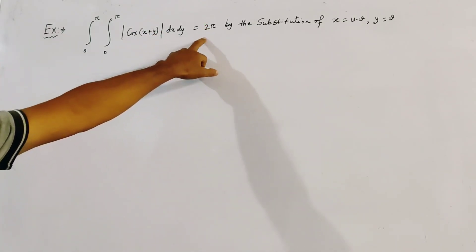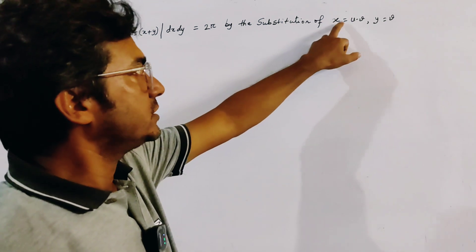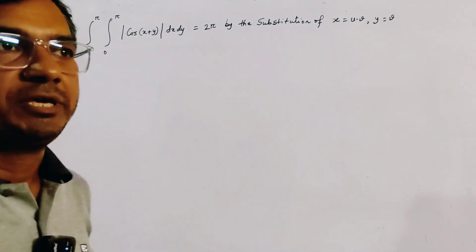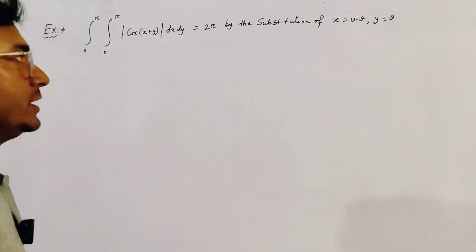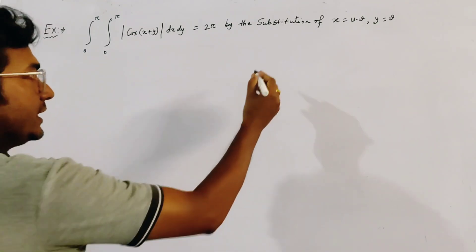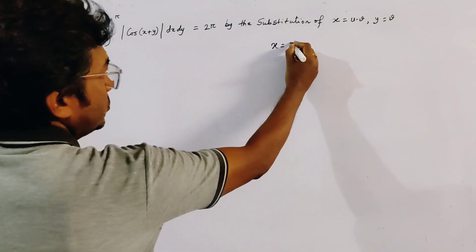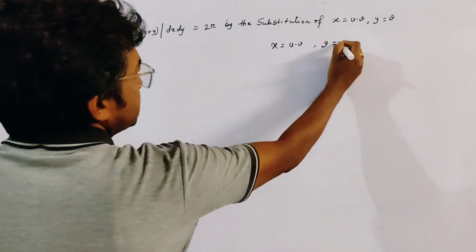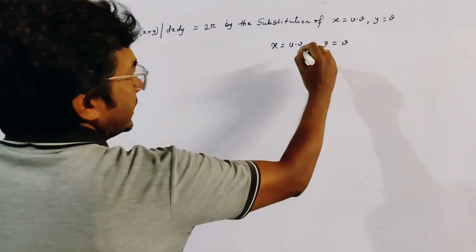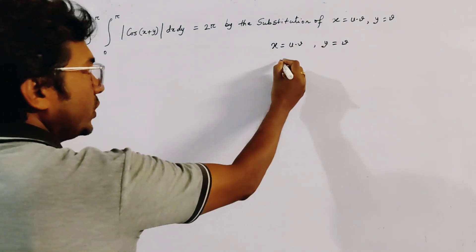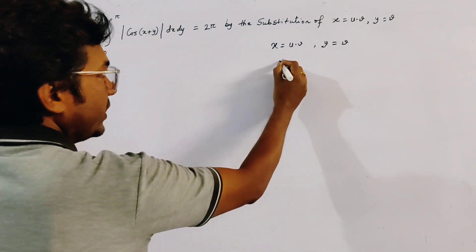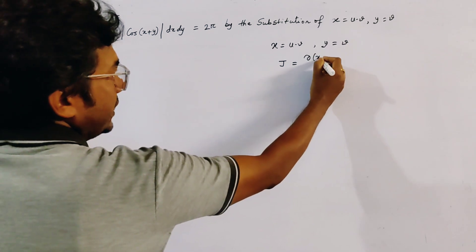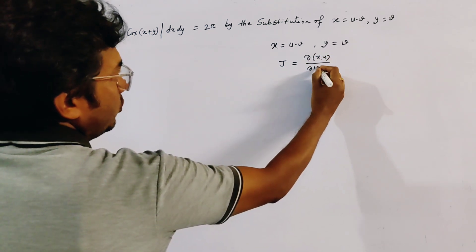We have to show this by the substitution x = u minus v and y = v. Since x = u - v and y = v are given, we need to find first the Jacobian, which is ∂(x,y)/∂(u,v).